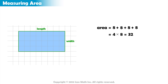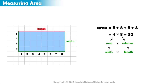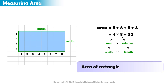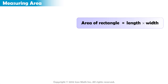We can use these facts to make a formula for the area of a rectangle. We multiplied the number of rows by the number of columns to find the area. And since the number of rows and columns represent the sides of the rectangle, we can find the area of any rectangle by simply multiplying its length by its width.